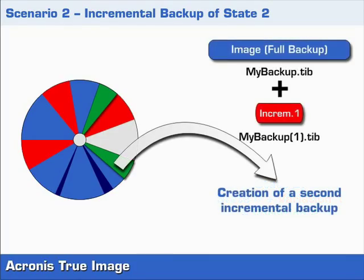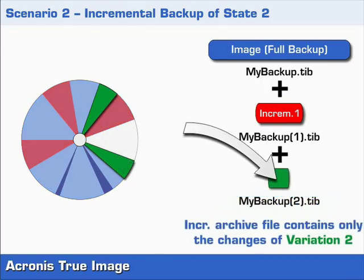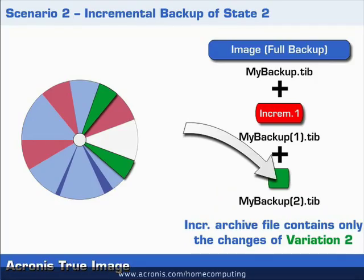So state 2 is in fact state 0 with the variations of backup 1 and 2 included. At this point it's important to understand that the incremental archive file just created depends on the full backup as well as the first red colored incremental archive data from backup 1.